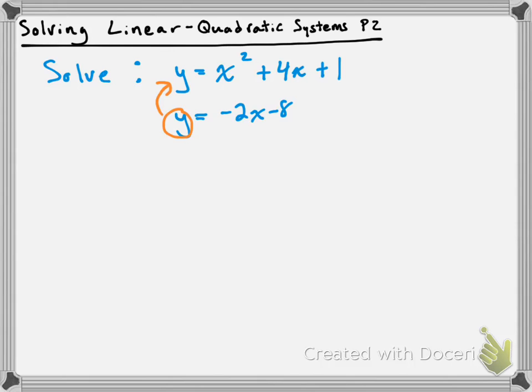So I'm going to substitute this equation, or that y value basically into there. That's going to give me negative 2x minus 8 equals x squared plus 4x plus 1, and that's a quadratic equation that we can solve, but I need to put it in the proper form.